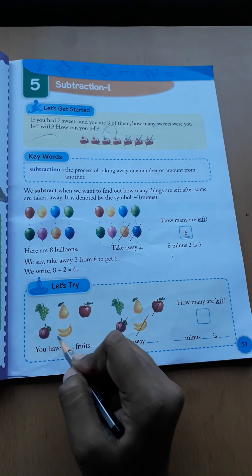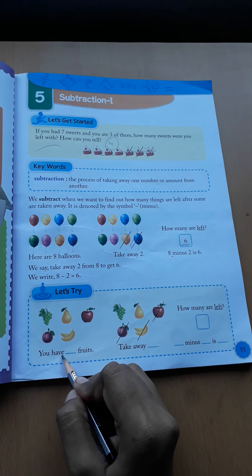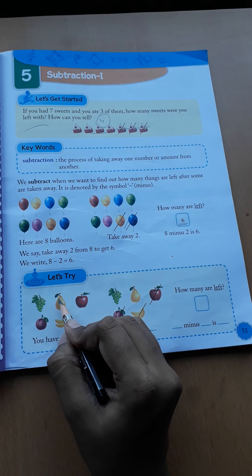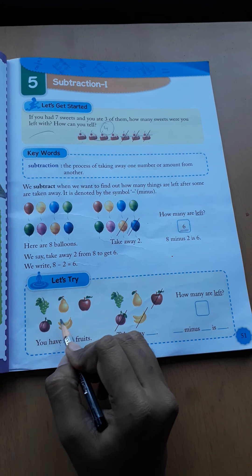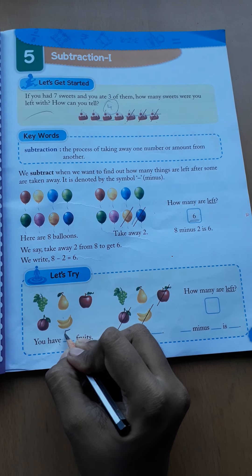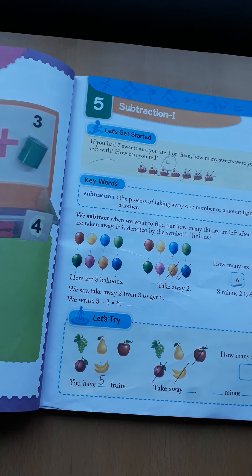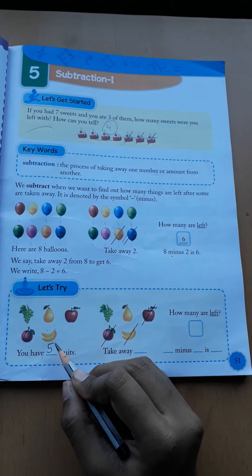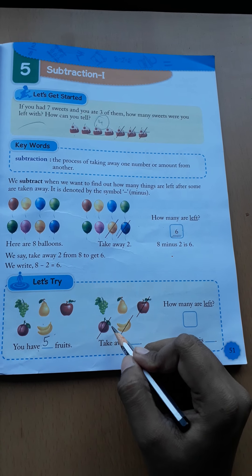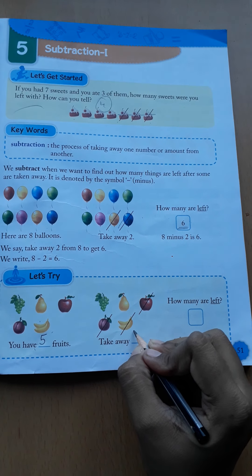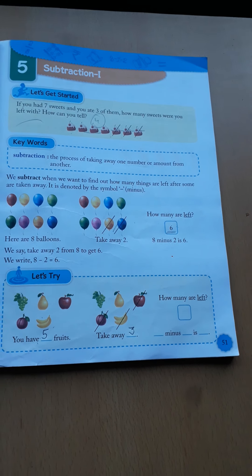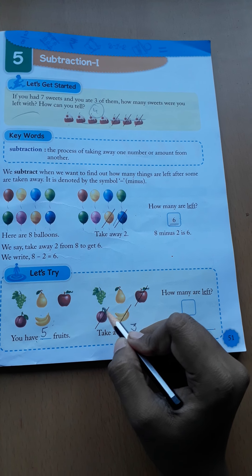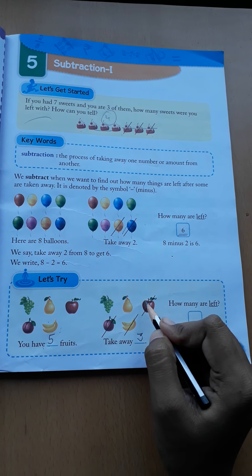Now see this question, let's try out. How many fruits are there? First of all we have to count all the fruits. One, two, three, four, five - so we have five fruits. Now from these fruits we have taken away three. See, one, two, three, four, five - we have five fruits and out of five fruits we have taken three fruits.